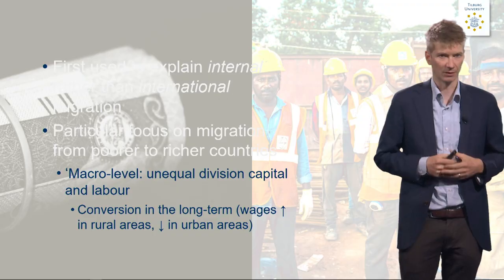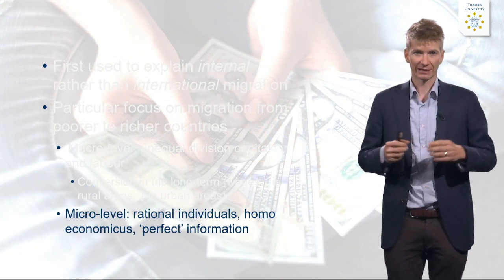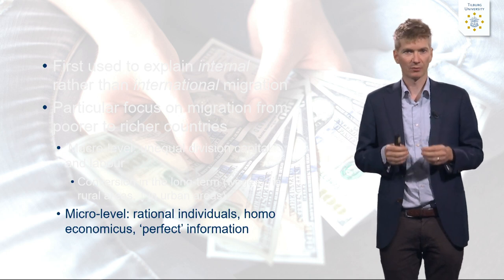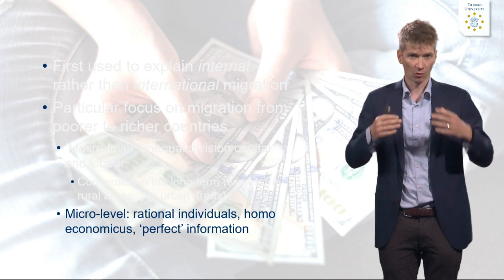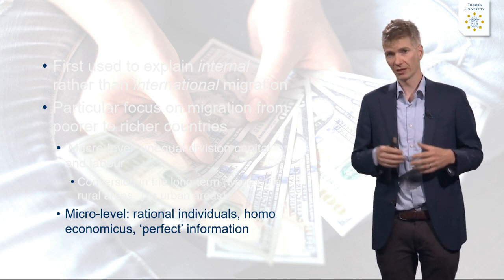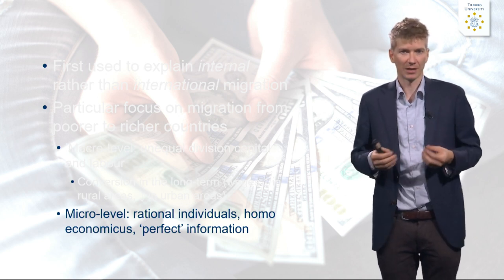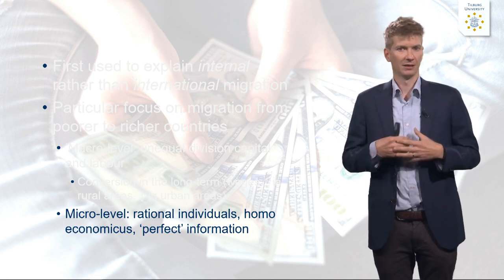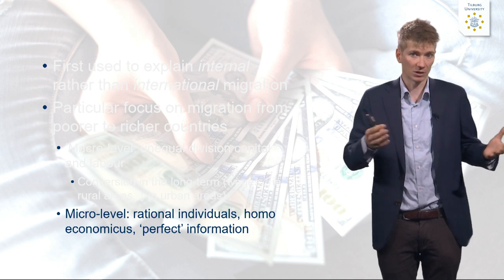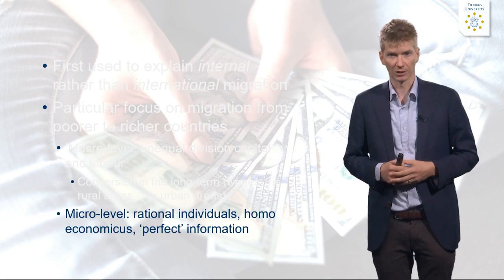Apart from the macro level, there is also a micro level part of the theory, which is very important to understand the full dynamics. At the micro level, the theory expects that people make individual rational decisions. People always act rationally and think about their economic situation — they are homo economicus — and they have perfect information. They know what they will earn in the destination country, so they can make a cost-benefit analysis and rationally decide that it is better to move abroad where a job and decent salary are available, which they can use to support their family back in the country of origin.